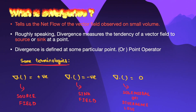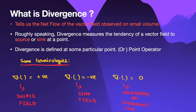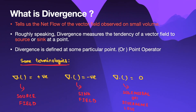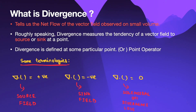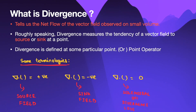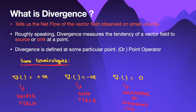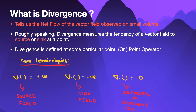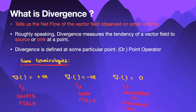Now, divergence is another operator which operates on a vector field and tells us the net flow of the vector field observed on a small volume. Divergence is defined at a particular point in the vector field, and it measures the tendency of a vector field to act like a source or sink at that point. If divergence at a point is positive it is acting as a source, if negative it is acting as a sink, and if zero it is divergenceless.